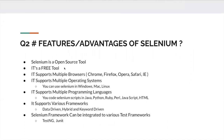The features and advantages of Selenium: first of all, Selenium is an open source tool and it is free. Anyone can download it without paying any amount and start using it. It supports multiple browsers — you can run your Selenium scripts on Chrome, Firefox, Opera, Safari, and more. It supports multiple operating systems — you can run your Selenium scripts on Windows, Mac, or Linux.